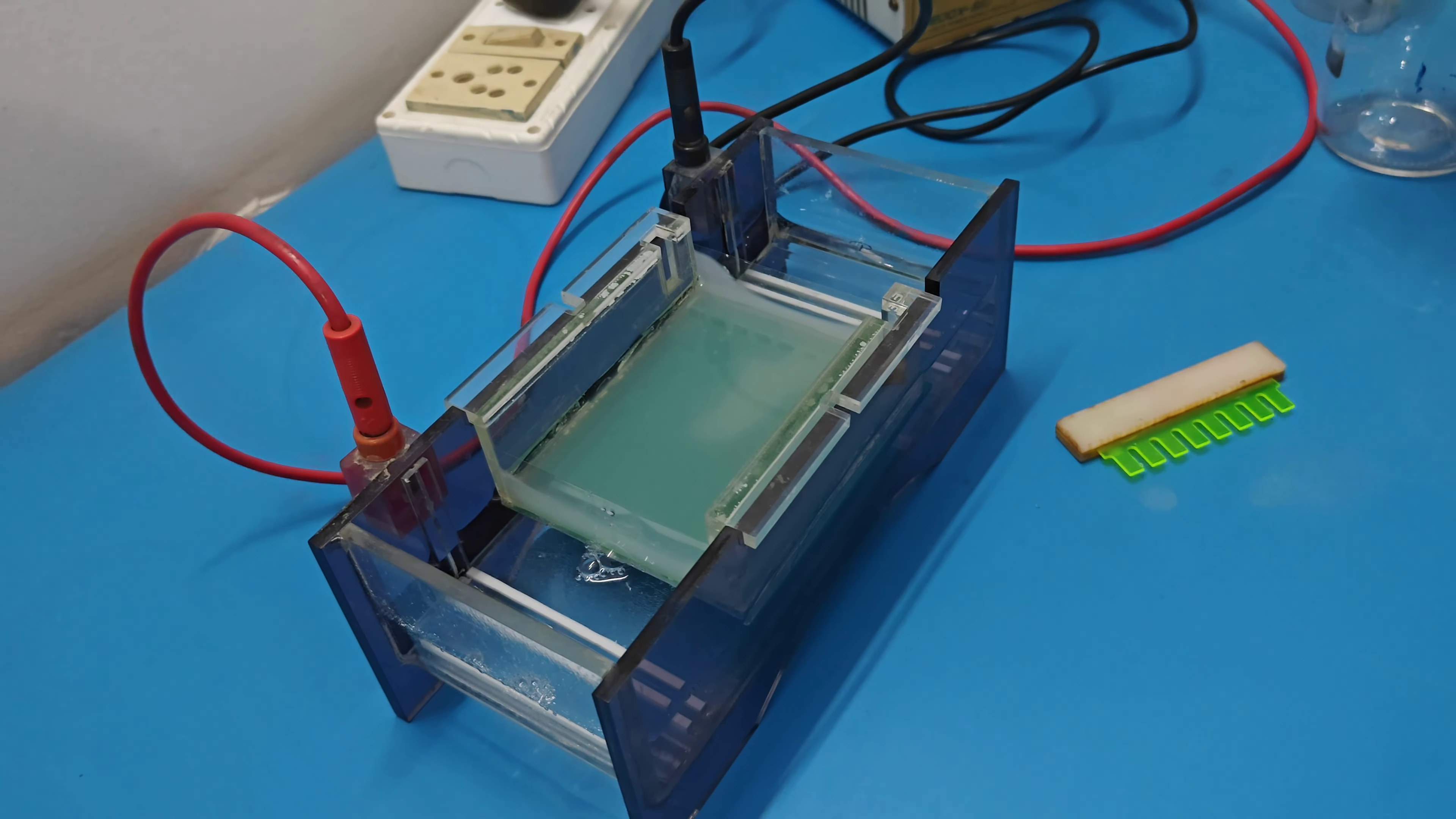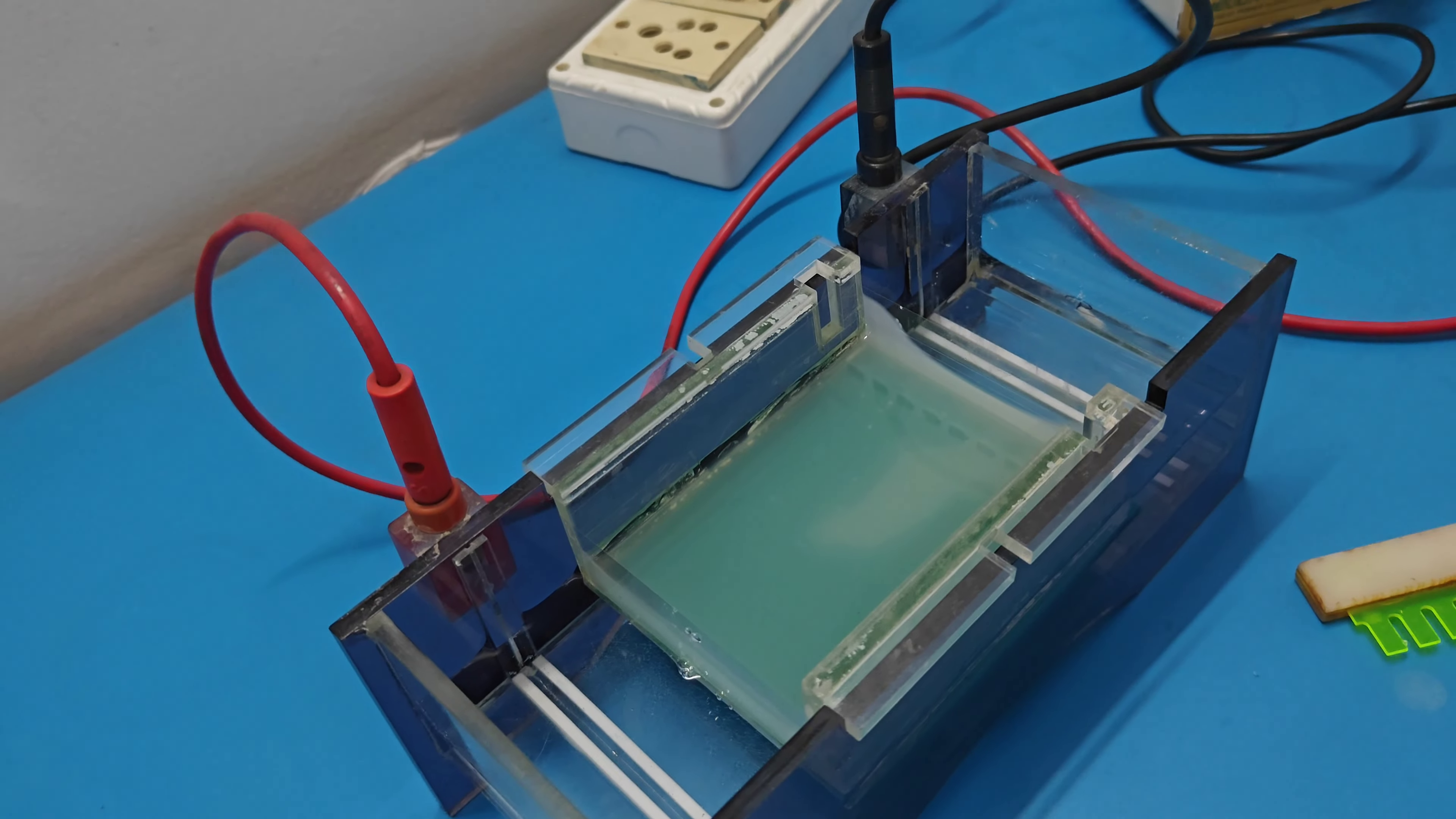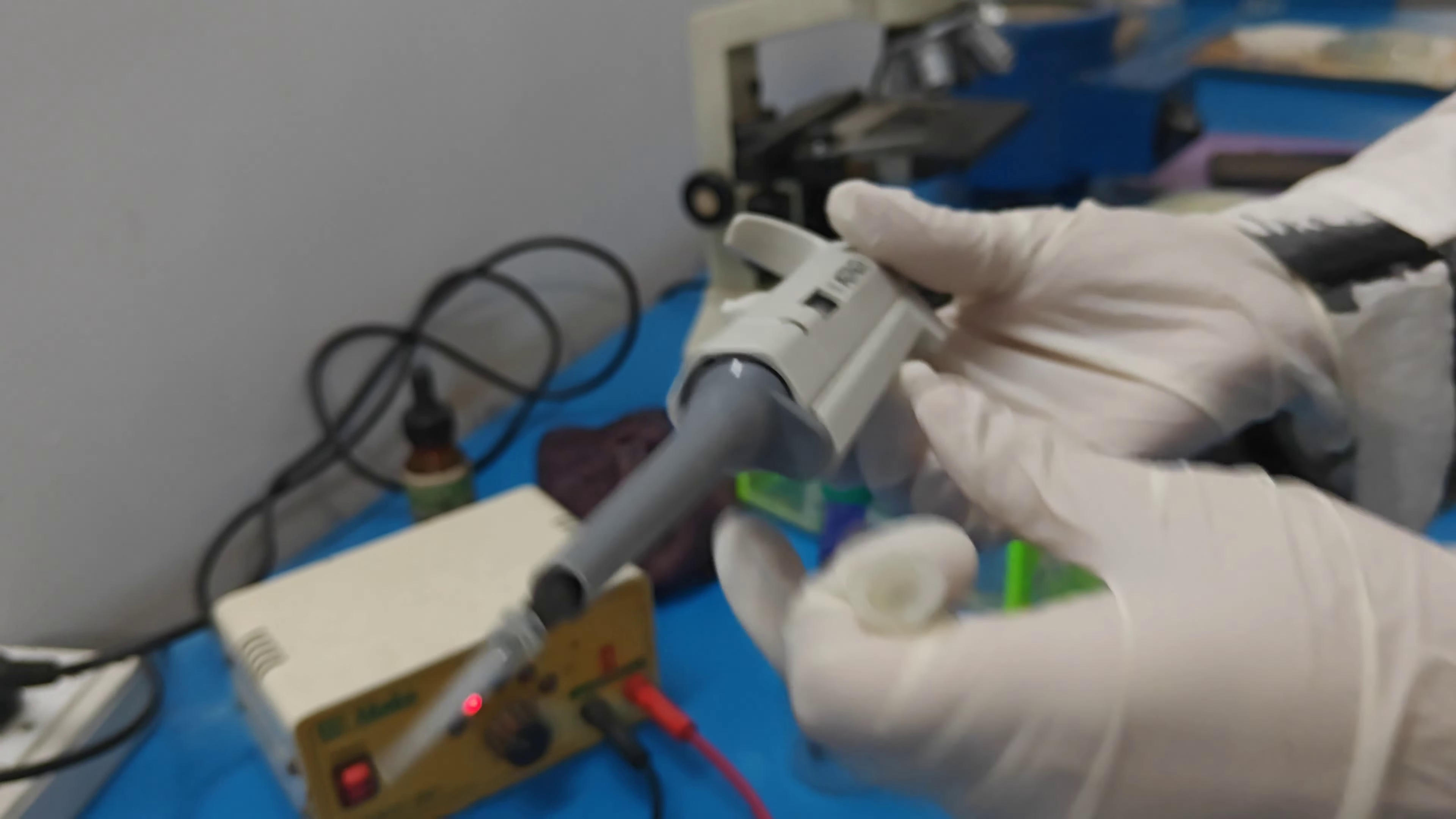Now our casting tray is immersed into the Tris buffer. Now check, see the bubbles form, hence it is working. Voltage will be 50 volt. Now I am going to add our sample, that is DNA isolate. In the previous experiment we already isolated our DNA, so we take 4 microlitre sample and put into this tube.